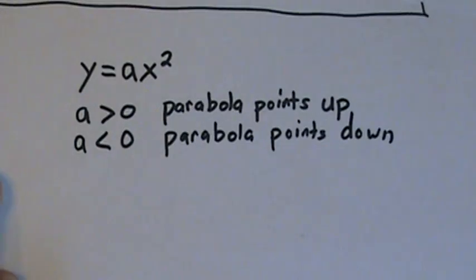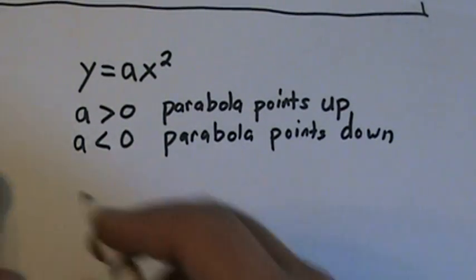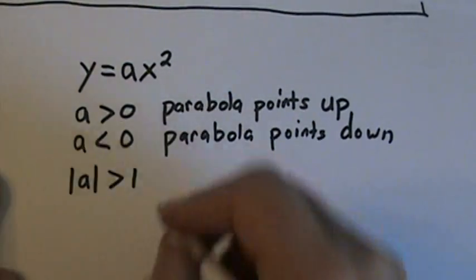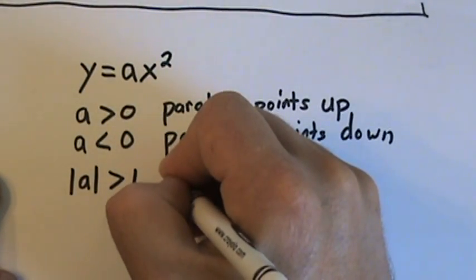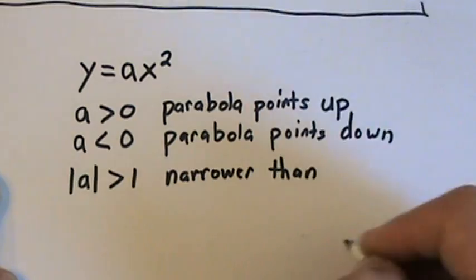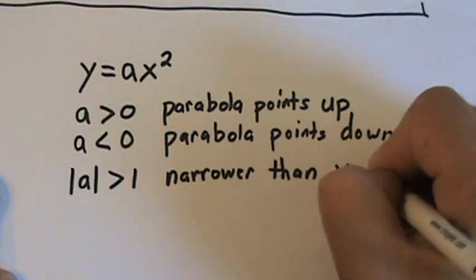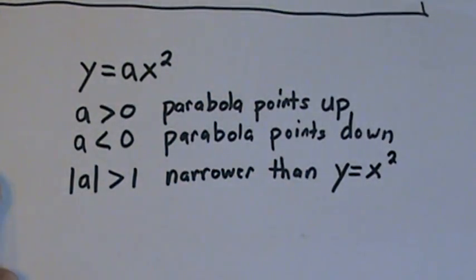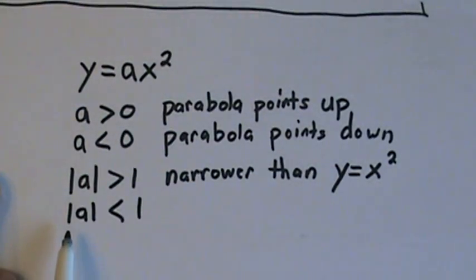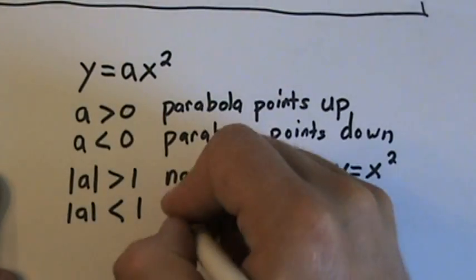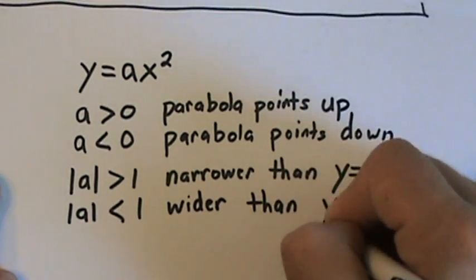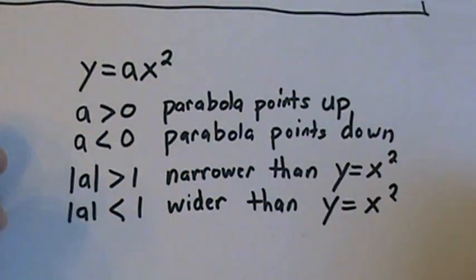Now let's talk about how we can determine how wide or narrow the parabola will be. If the absolute value of a is greater than 1, we'll have a parabola that is narrower than the parabola y equals x squared. Finally, if the absolute value of a is less than 1, we'll have a parabola that is wider than the parabola y equals x squared.